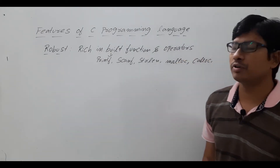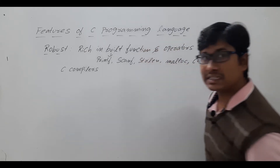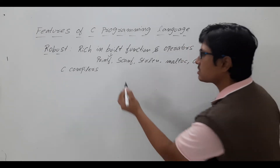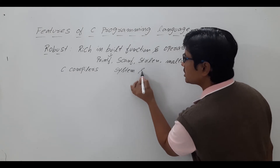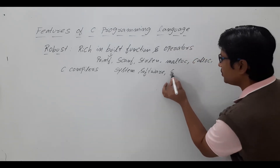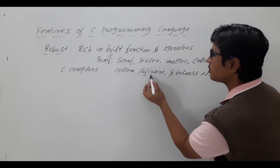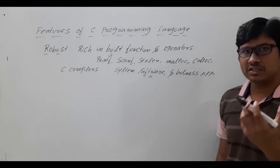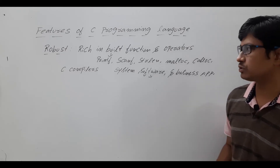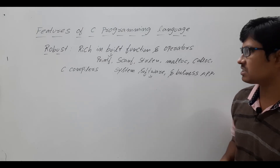C programming language is robust because it has rich inbuilt functions and operators. Another important thing is that C compilers support both assembly language and C programming language. Because of that, we can design system software as well as business applications using C. The system software is nothing but your operating system. In fact, the first traditional C program was used to design the Unix operating system.